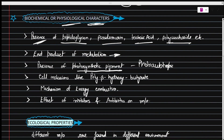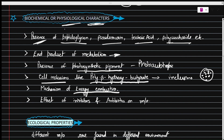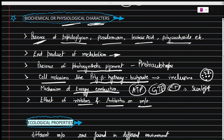Cell inclusions like poly-beta-hydroxybutyrate are also considered — these form small bodies called inclusion bodies inside the cell, which are characteristic of certain bacteria. Then comes the mechanism of energy utilization: whether they use ATP, GTP, or CTP as a major energy source, or whether they use sunlight directly. The effect of inhibitors and antibiotics on microorganisms is also considered under biochemical and physiological characters.